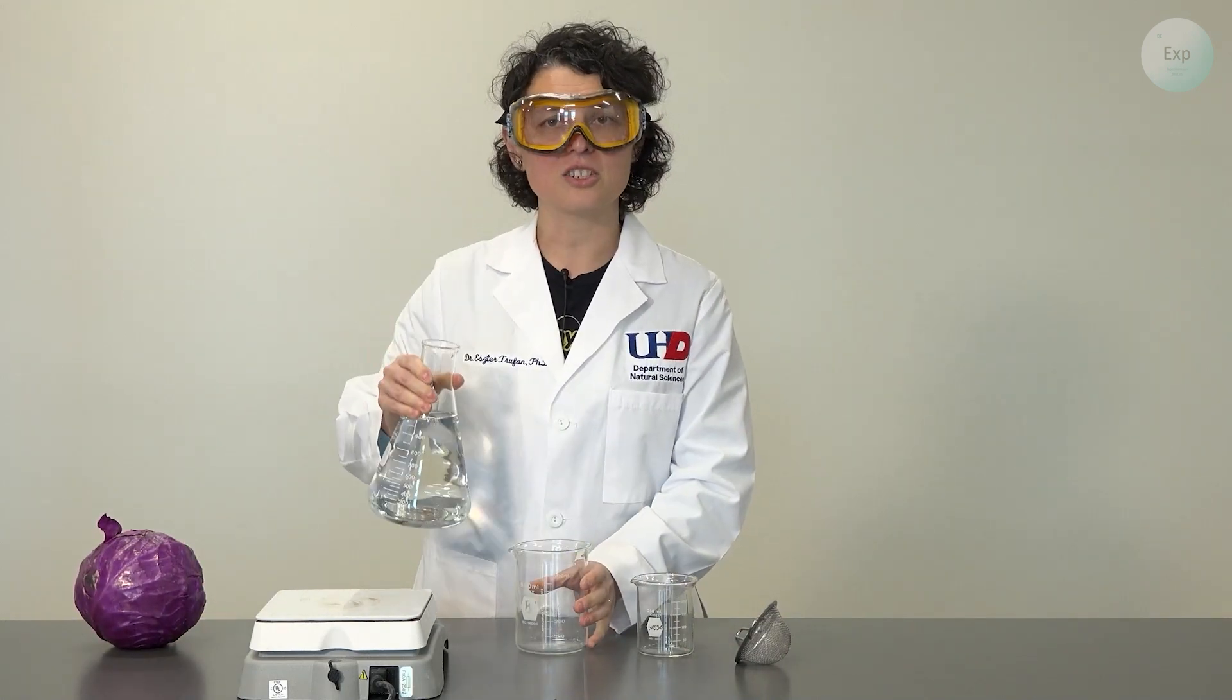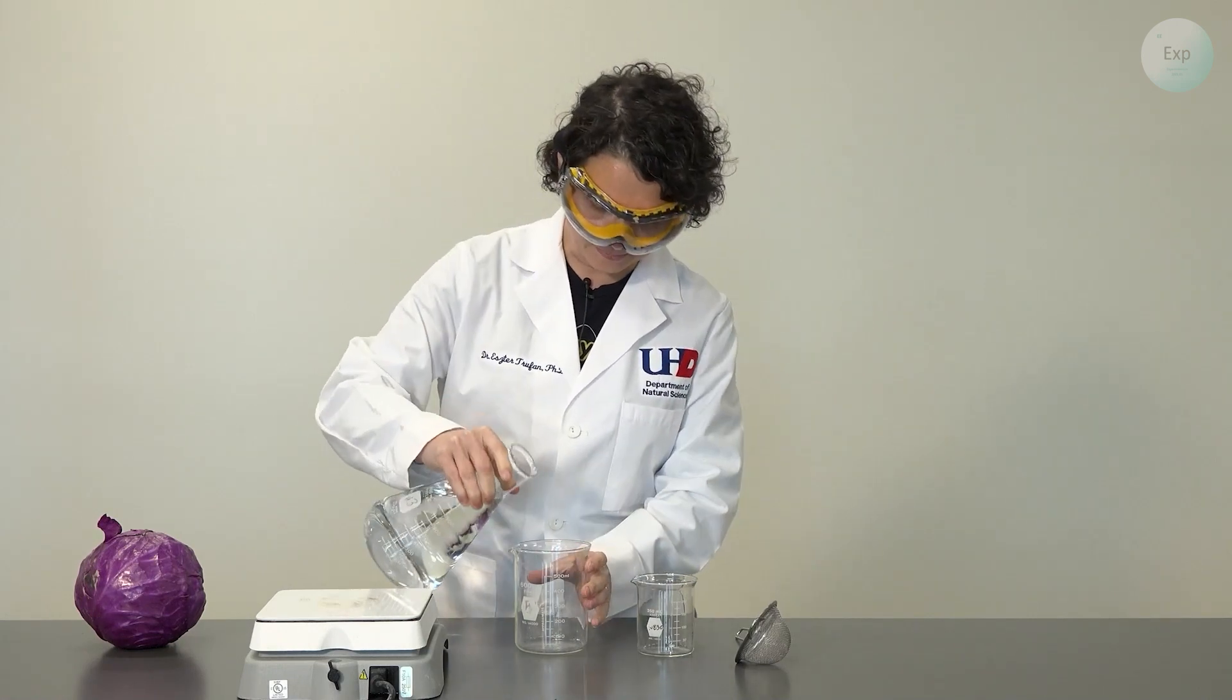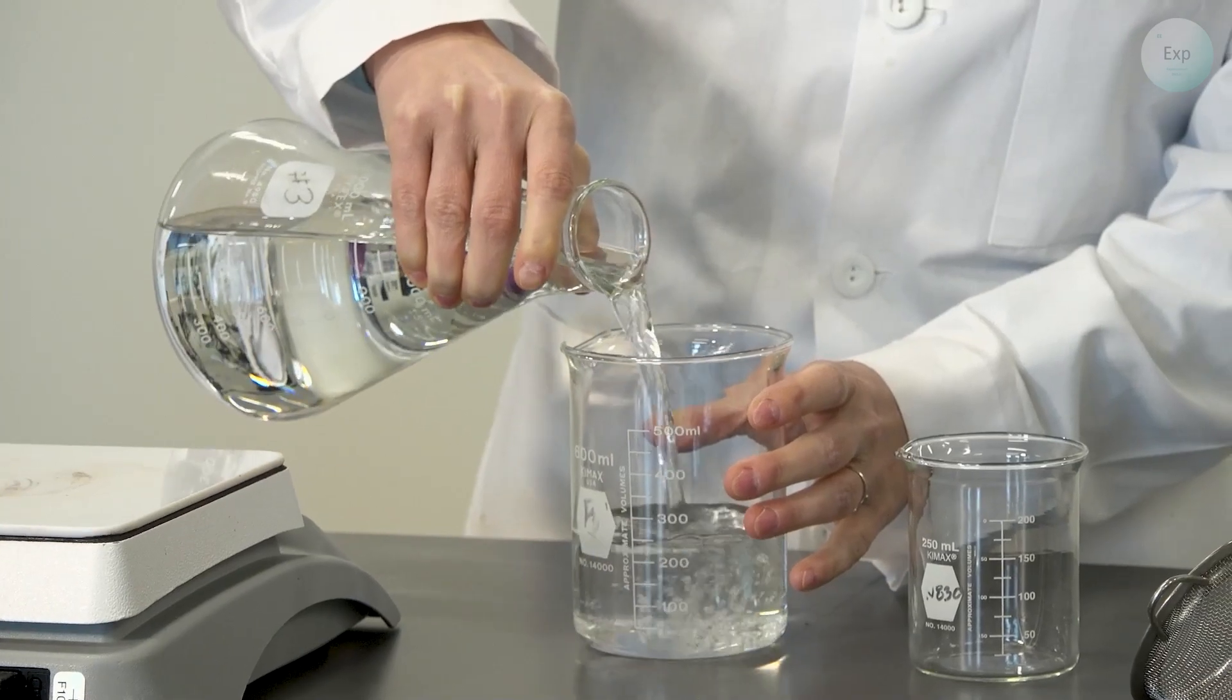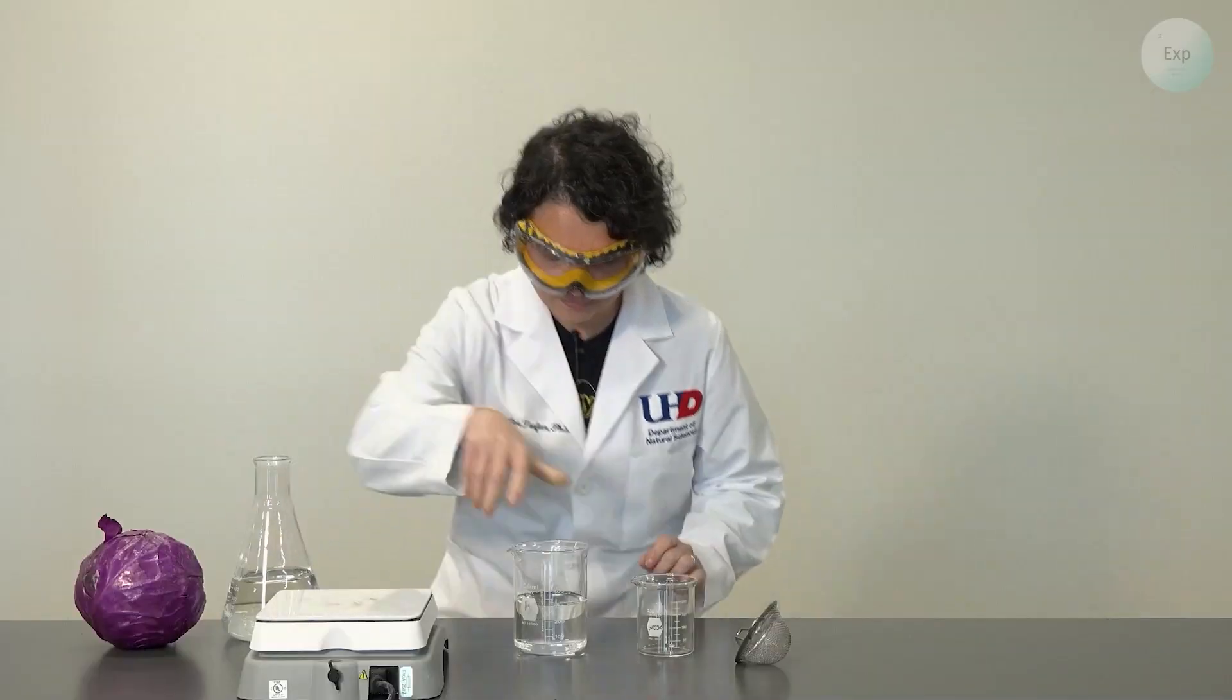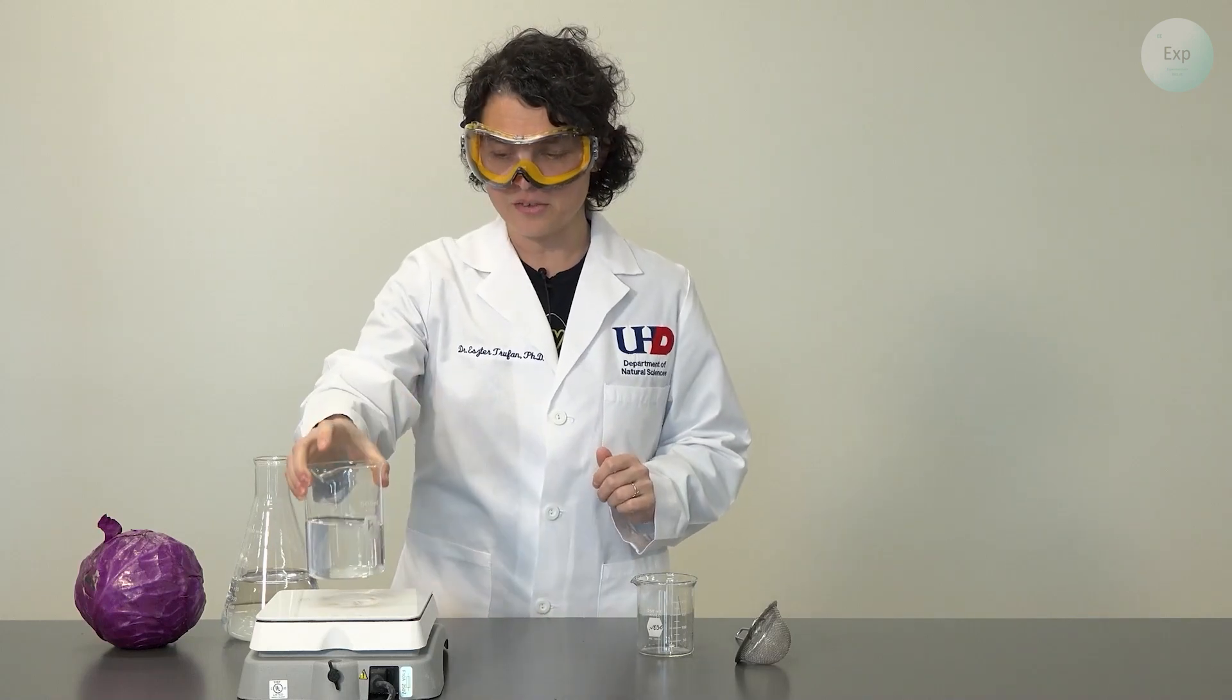First, in our large 600 milliliter beaker, we're going to pour approximately 300 milliliters of water. And this is approximately 300 milliliters.